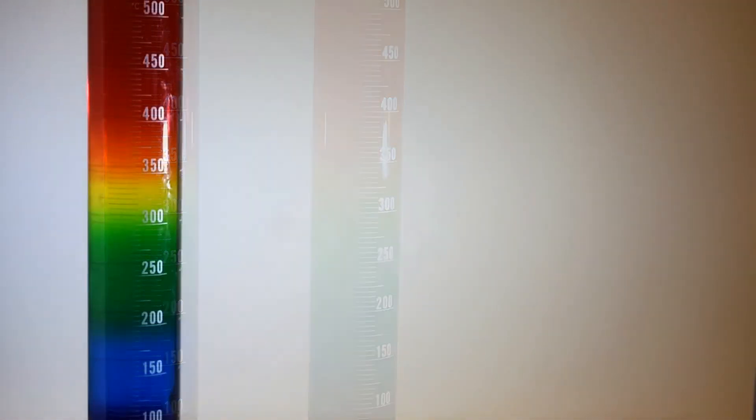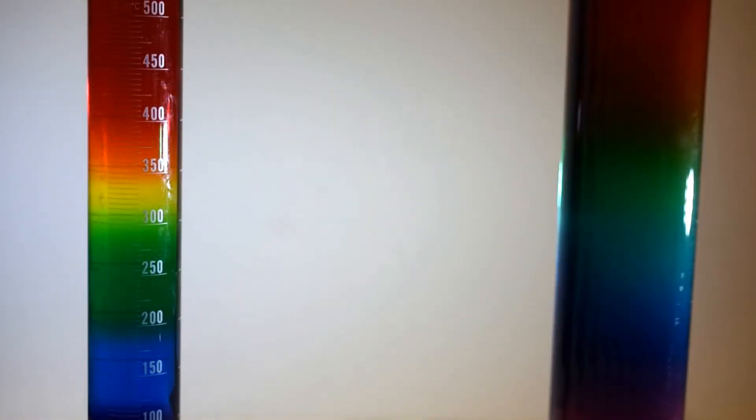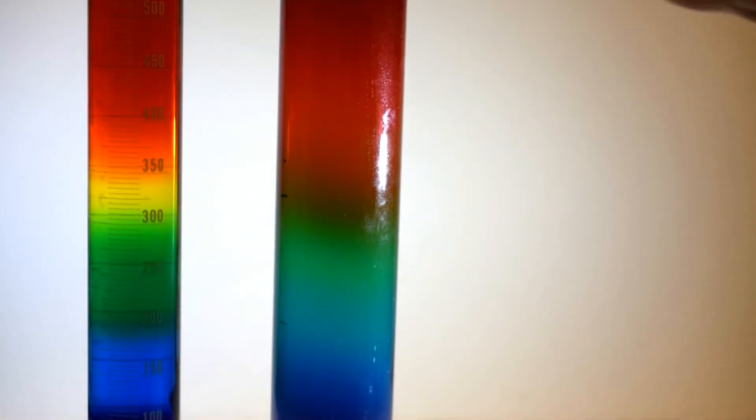You can also prepare the column in a larger graduated cylinder. This one on the right is one litre. It's about six weeks old and the colours are beginning to merge.